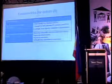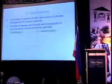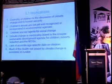In summary, the centrality of children to the discussion of climate change and to human security is paramount. Children's issues are not well recognized or incorporated in environmental agendas, but children are key agents for social change. Climate change is inextricably linked to the broader sustainable development agenda, poverty reduction, and the MDGs. There is a lack of accurate, age-specific data on children and the impact of climate change, but much of the health risk can be avoidable or curable. A human rights-based approach necessitates inclusion of children's issues, their agenda needs integration into intergovernmental processes, and many opportunities exist to generate support for community empowerment, shared learning between countries, and field activities designed for results.